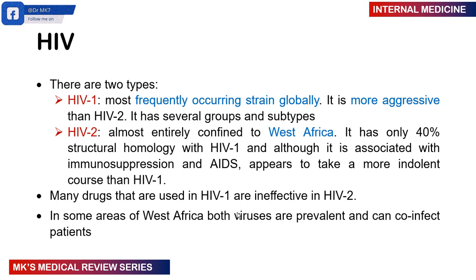HIV-2 is associated with immunosuppression and AIDS, but it takes a very long time. Patients with HIV type 2 usually live longer than those with type 1, which tends to be more aggressive. Many of the drugs we use for HIV type 1 are ineffective for HIV type 2. In Western Africa, both viruses can be present and may co-infect a patient.